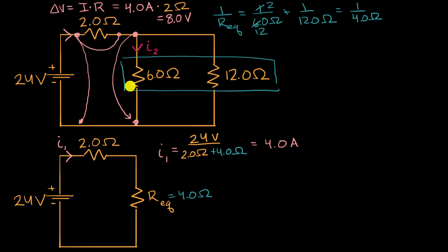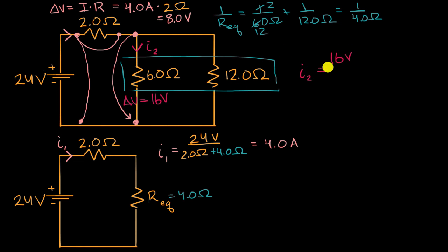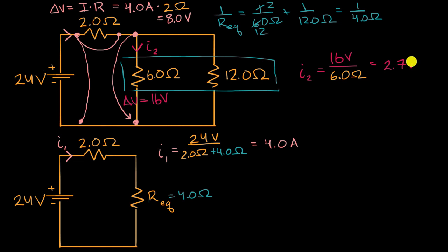If the delta V across the six ohm resistor is 16 volts, we can use Ohm's law again to find I two. I sub two equals 16 volts divided by six ohms. 16 divided by six is two and four sixths, or two and two thirds, or 2.6 repeating.